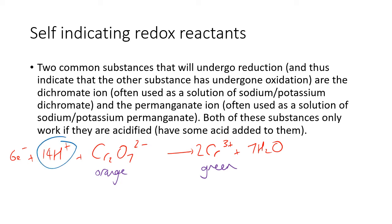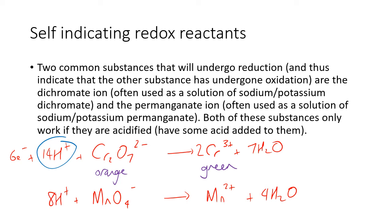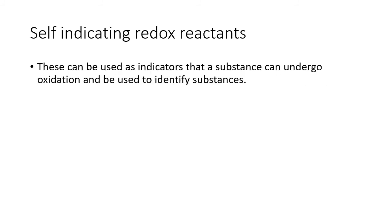The other one is the permanganate reaction: MnO₄⁻ going to Mn²⁺, plus four waters, plus eight hydrogen ions, plus five electrons. MnO₄⁻ is purple and Mn²⁺ is pale pink, which effectively appears colorless. So if the solution goes from purple to pale pink, you know that reduction has occurred and the other substance has undergone oxidation.